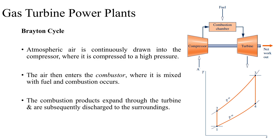In this video we're going to talk about combined cycles. Until now we've looked at vapor power cycles and gas power cycles. With gas turbine power plants we've looked at the Brayton cycle, where atmospheric air is continuously drawn into a compressor, compressed to a higher pressure, mixed with fuel in the combustion chamber, and then the combustion products are expanded through the turbine and discharged to the surroundings after a net work output is obtained.